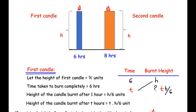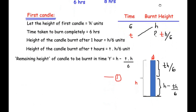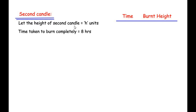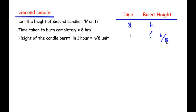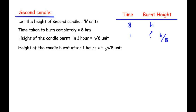Now we follow the exact same steps for the second candle, which burns out in eight hours. The height of the second candle is also h units. In eight hours the total height burns down, so in one hour the height burnt is h over eight. Therefore, the height of the second candle burnt after t hours is t times h over eight units.